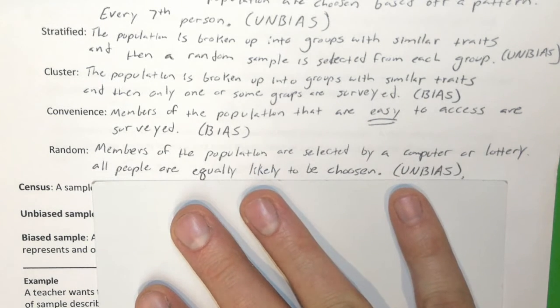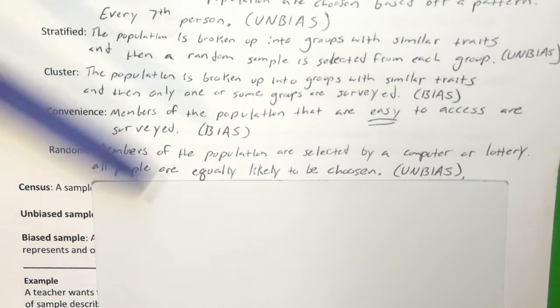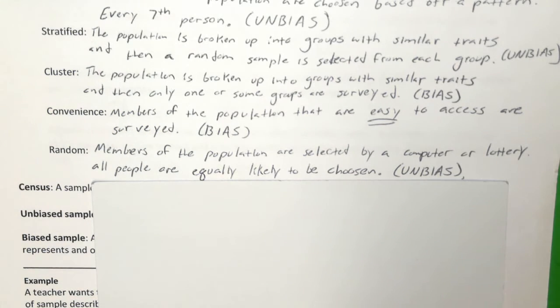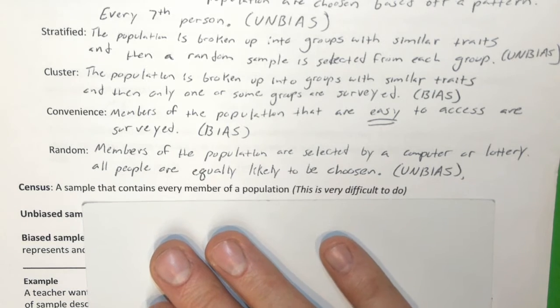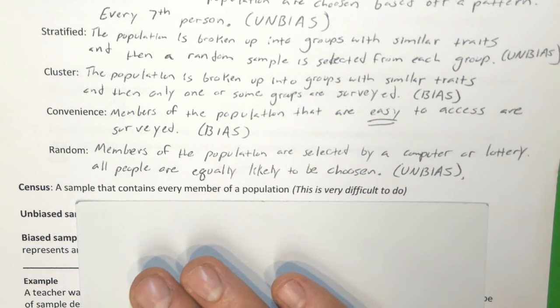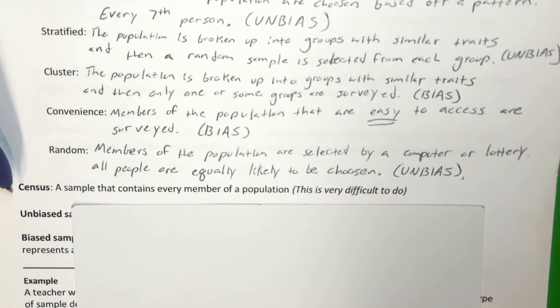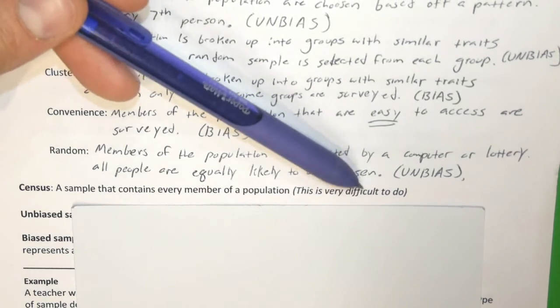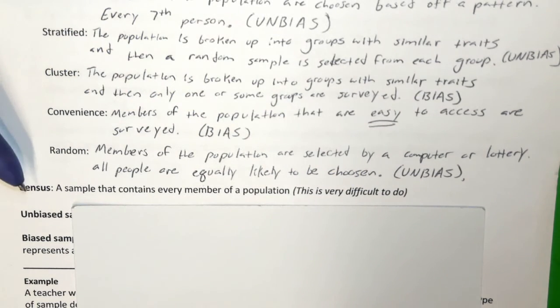A random sample is one of the trickiest to come up with. Members of a population are selected by a computer or by a lottery, and all people are equally likely to be chosen — whether you live close by or far away, friend or stranger. Lastly, a census is a very special kind of sample because it includes every member of the population, making it very accurate. It is also very difficult, but it is the best way to sample a group.